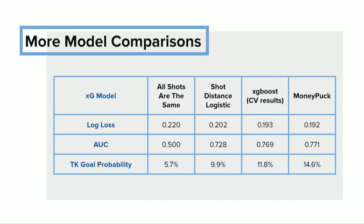To bring things full circle, we looked at Travis Konechny's goal earlier and knew it wouldn't be right to assume it had the same probability of scoring as the average shot — about 5.7%. If we incorporate shot distance and look at the logistic model, we'd assume about a 10% chance of scoring. The XGBoost model goes a little bit higher, closer to 12%. MoneyPuck's model does the best job by saying it's 15%. And if we had additional features, maybe from tracking data, we might even say it's more dangerous than that.